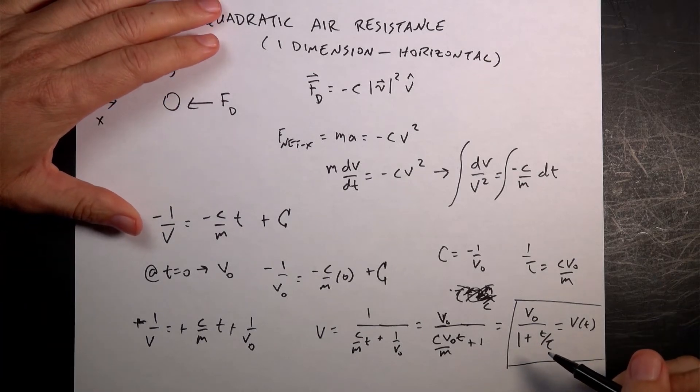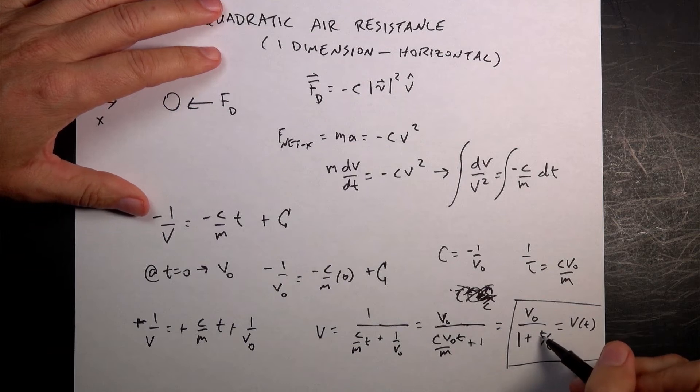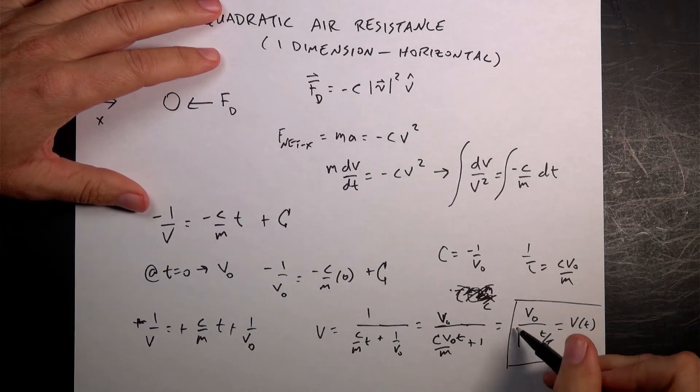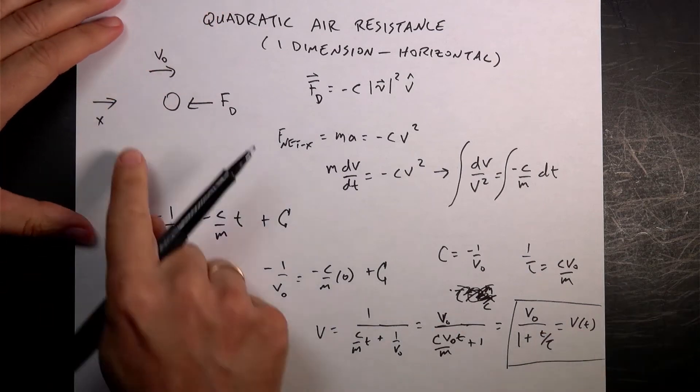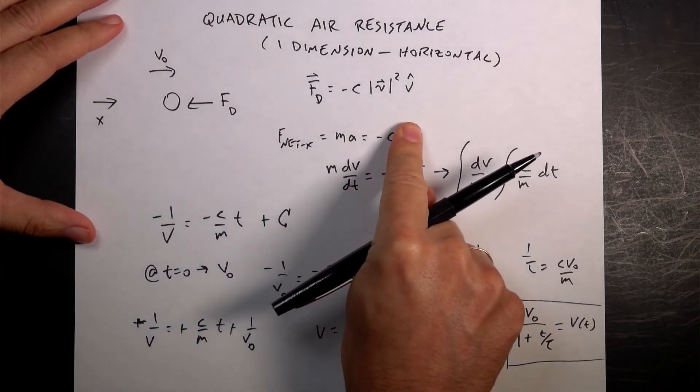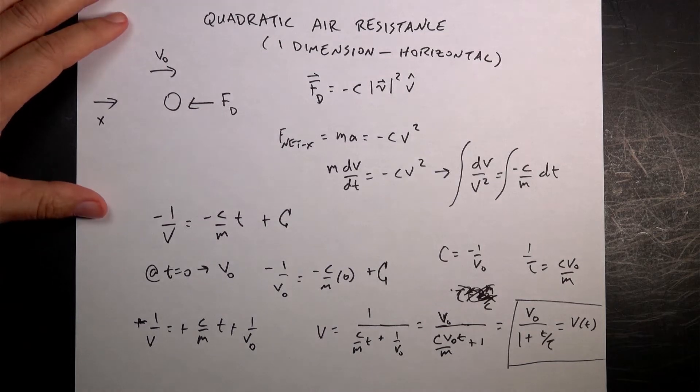Let's just check real quick if this makes sense. I'm going to plot this to show you that it does, but we'll do that at the end. As t gets larger and larger and larger, this term gets larger, and so the velocity gets smaller, which makes sense. If I shoot this, it's going to slow down.